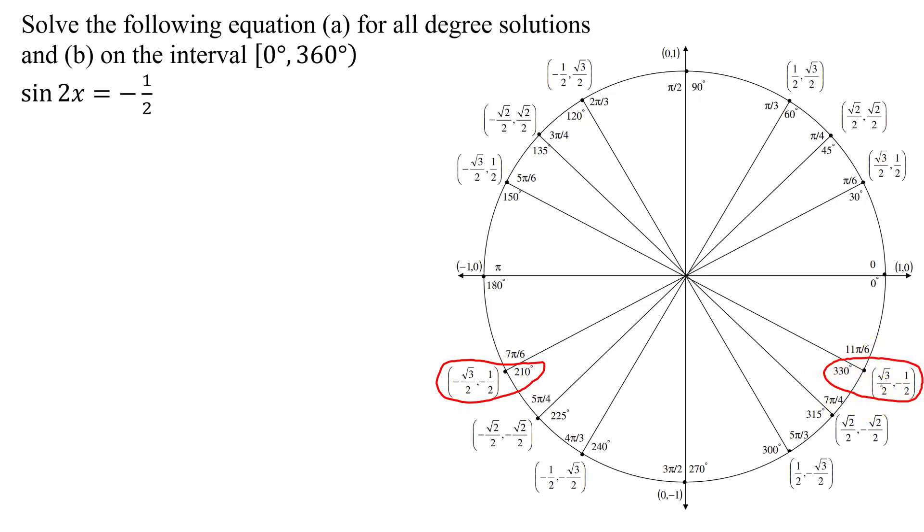So the argument of my trig function 2x is going to either equal 210 degrees, or it also can equal 330 degrees.